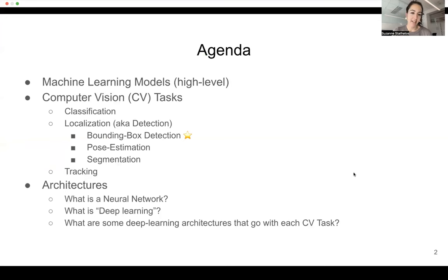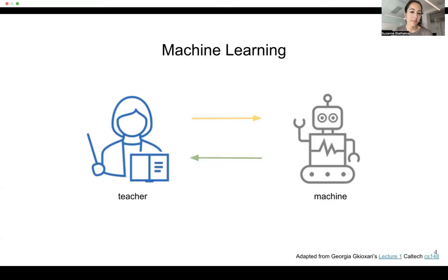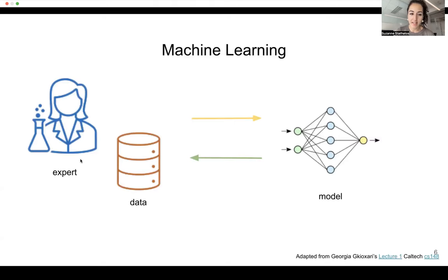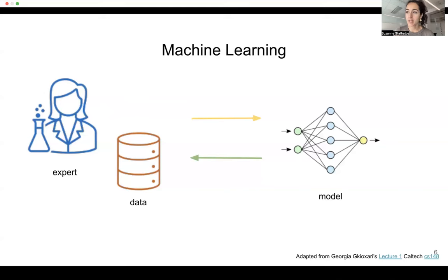First we're going to talk about machine learning at the highest level, then we're going to talk about the tasks, then we're going to talk about each of the architectures. So in machine learning, you have a machine and a teacher, and that teacher is comprised of data and an expert. The expert is there usually to label that data. So you have images and labels on those images, and you feed those into a model.